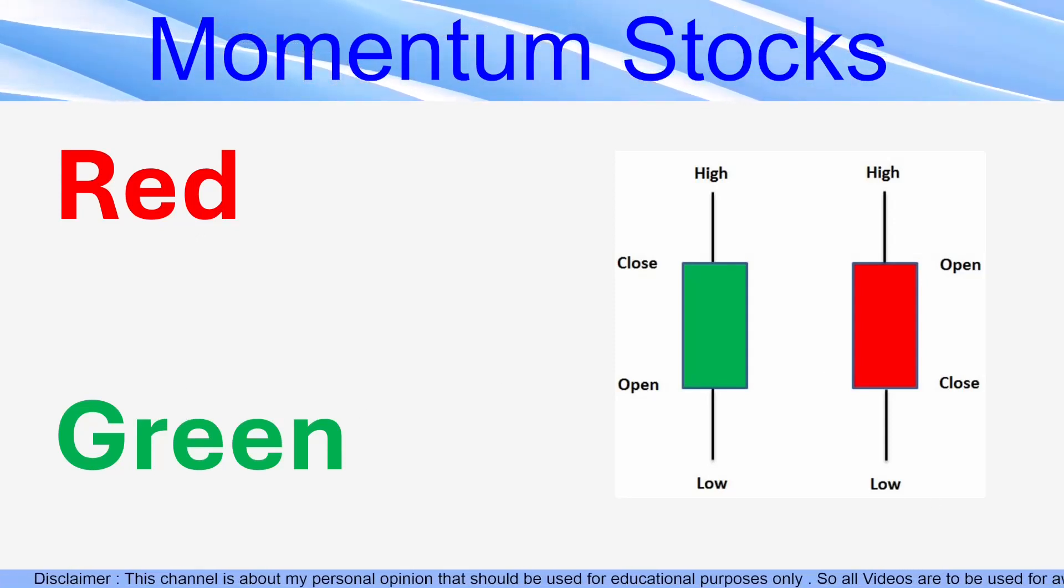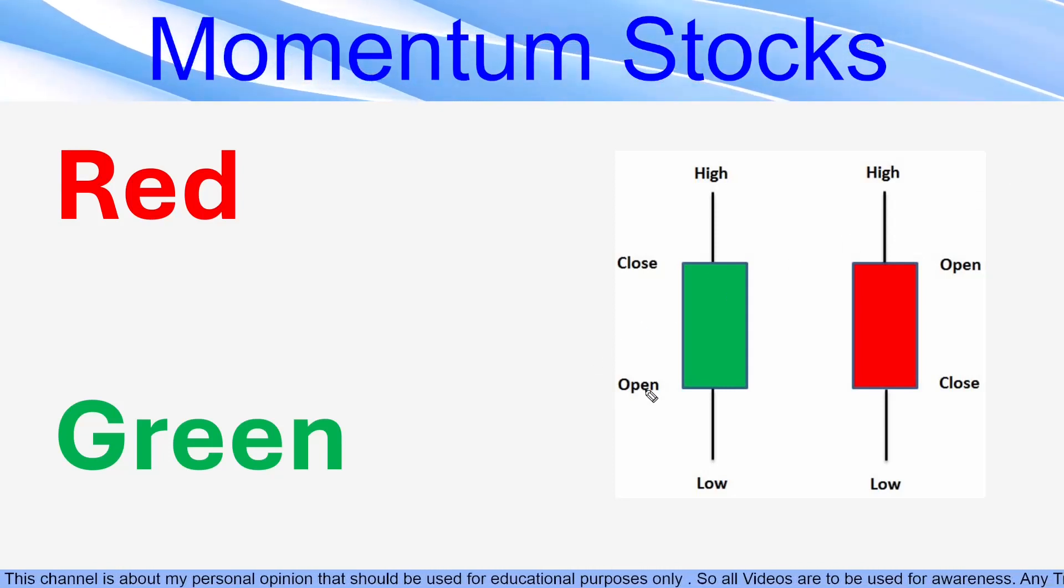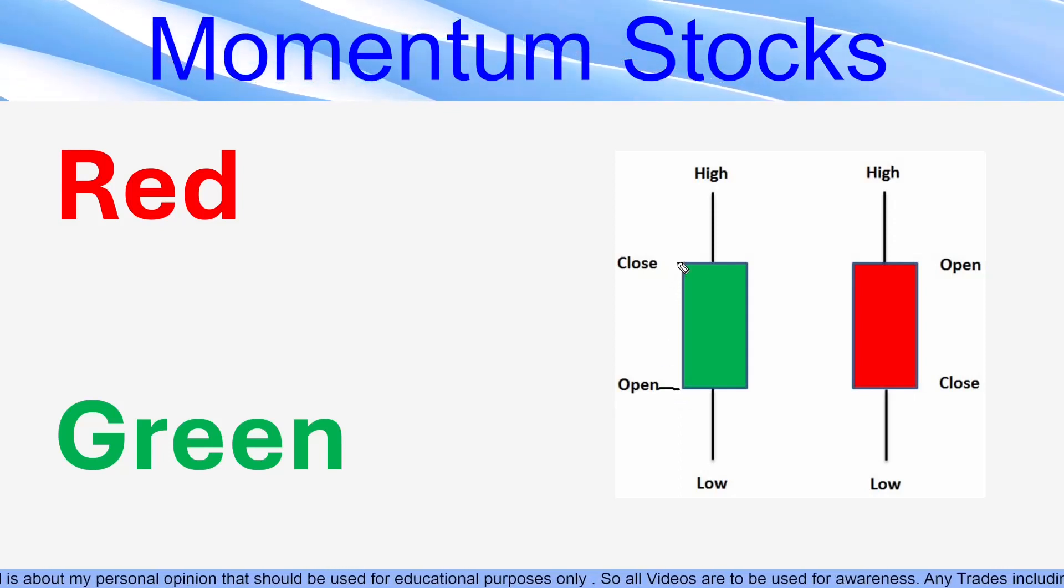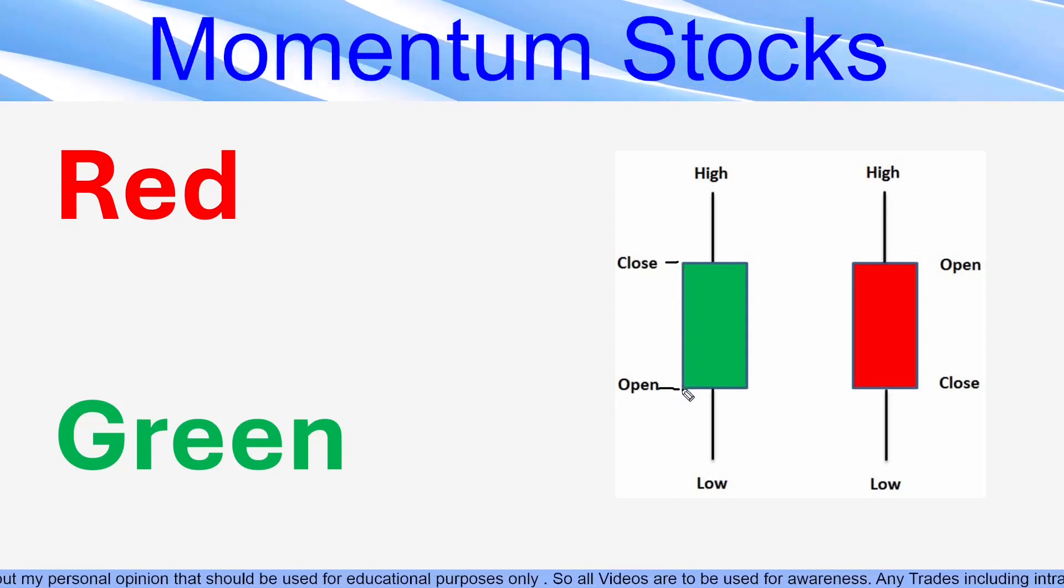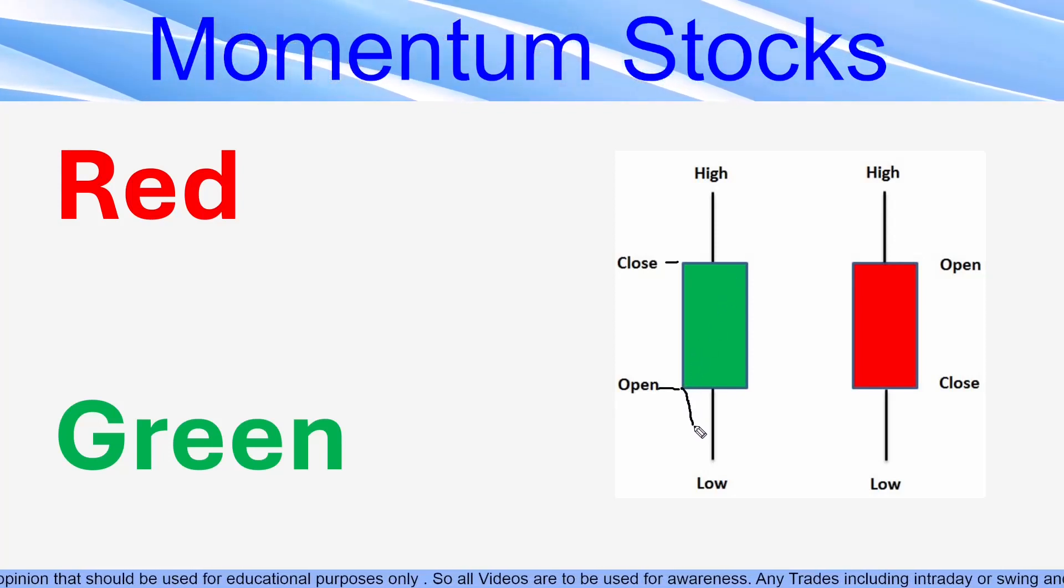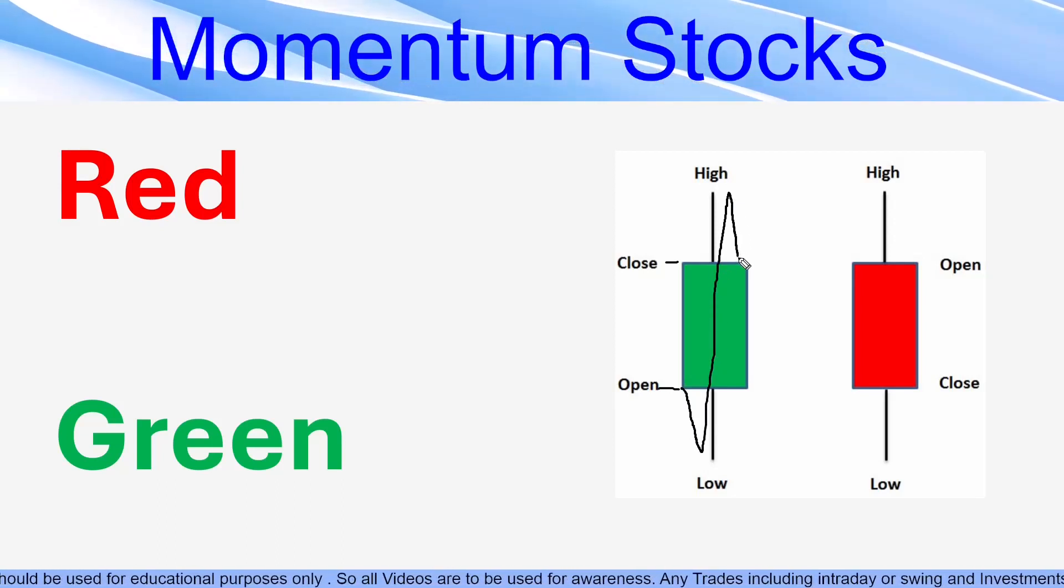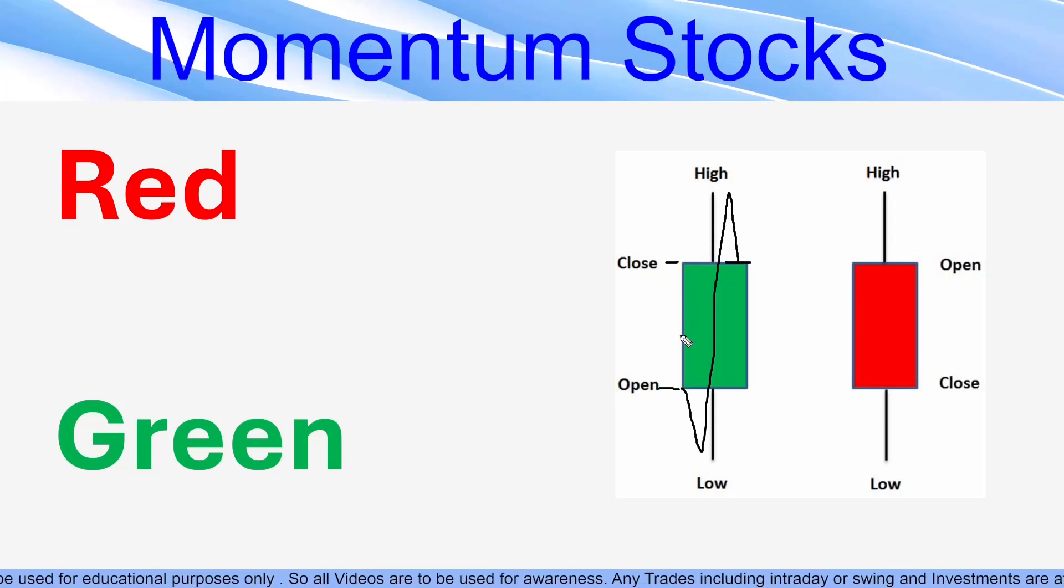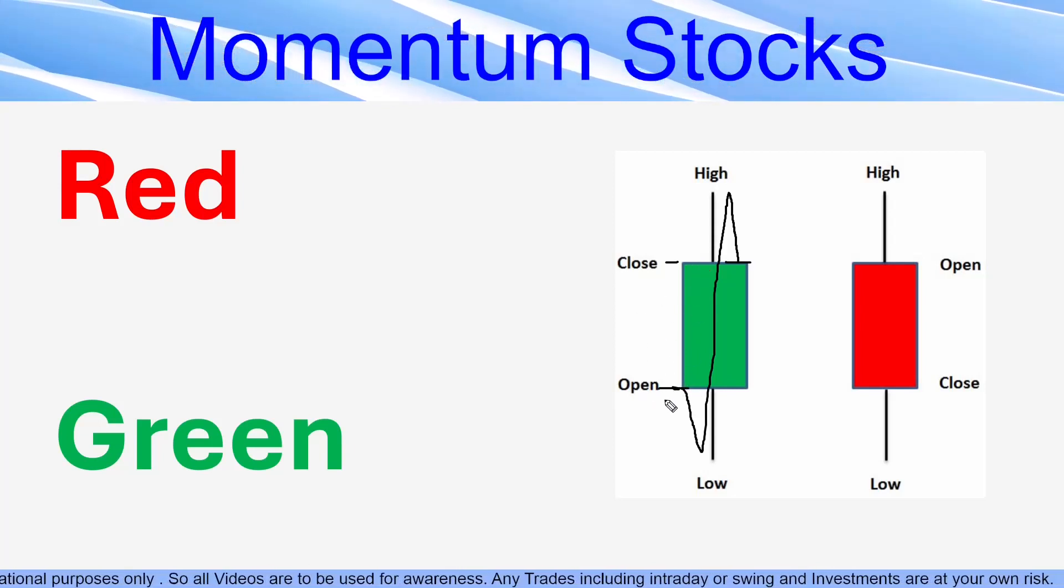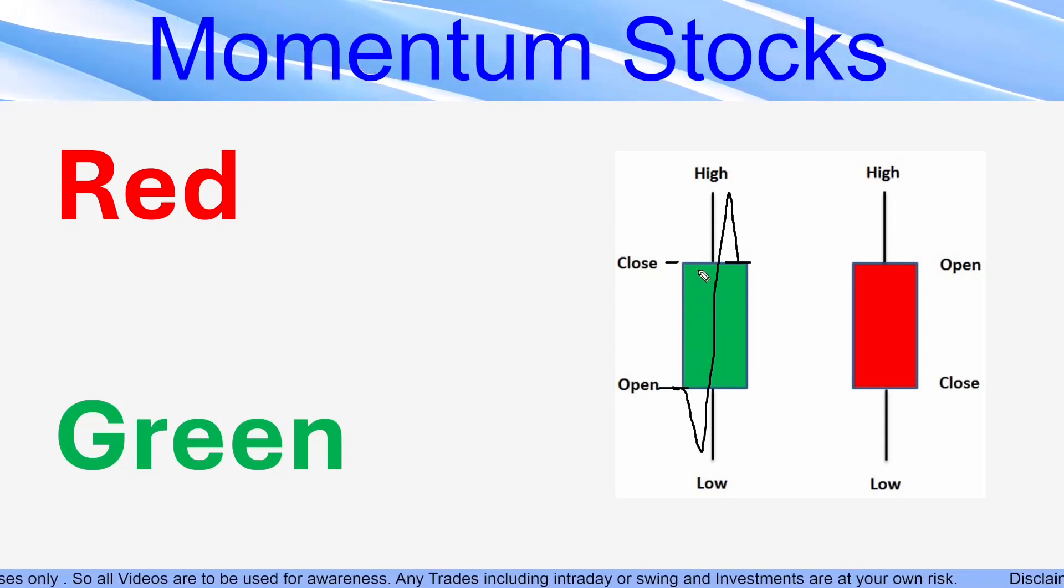So here what we see is this candle on the left is green. Why is it green? Because the open of that candle is below the close. So during that interval, in our case one hour, the stock went down, made a high and closed here. So that is the reason, because it has closed above the open, it showed positivity. That is the reason it is green in color.